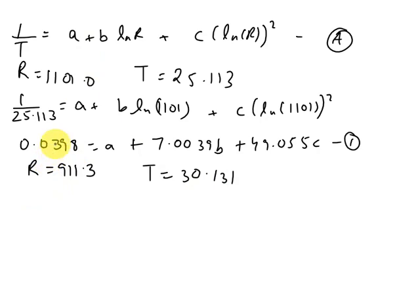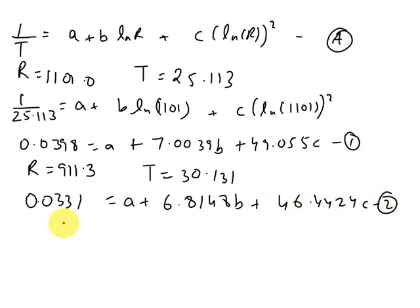R is 911.3 and temperature is 30.131. Again, putting in this and simplifying like the above, we get the equation as 0.0331 equals A plus 6.8148B plus 46.4424C. And let us take this as equation 2.